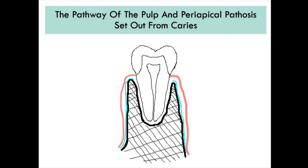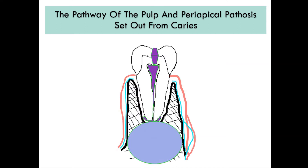Let's understand the pathway of pulp and periapical pathosis from caries. Initially, caries involves the enamel and then extends into the dentine close to the pulp, and then involves the pulp. Once the pulp is infected, it extends to the root and then to the peri-apex, where it initially forms apical periodontitis, then periapical abscess, which enlarges, causes vestibular expansion, and then drains through a sinus opening.